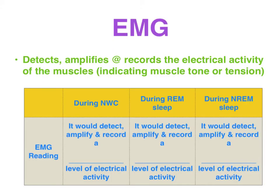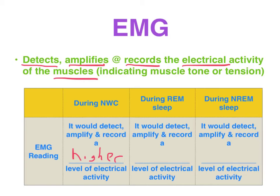When describing the functionality of an EMG, use the DARE acronym: it detects, amplifies and records the electrical activity of the muscles, providing an indication of muscle tone or tension. Generally during normal waking consciousness it would record a higher level of electrical activity. In a sleep study, it would detect, amplify and record a lower level of electrical activity when in REM sleep due to REM paralysis — that is, paralysis of the muscles from the neck down. During non-REM sleep it will detect, amplify and record a higher level of electrical activity, indicating higher muscle tone or tension.